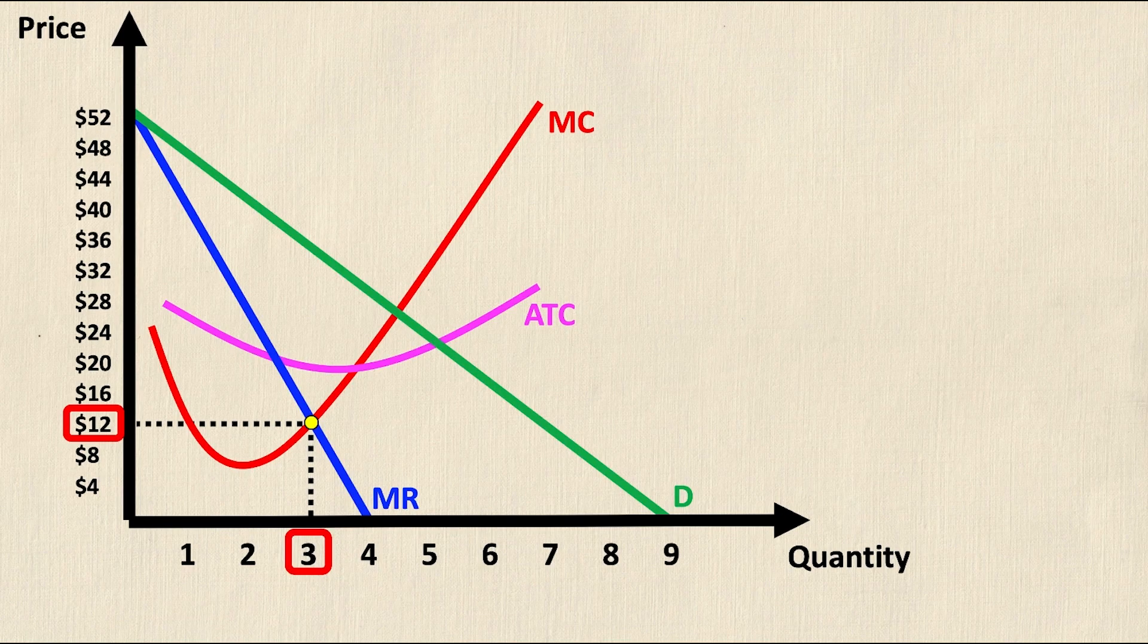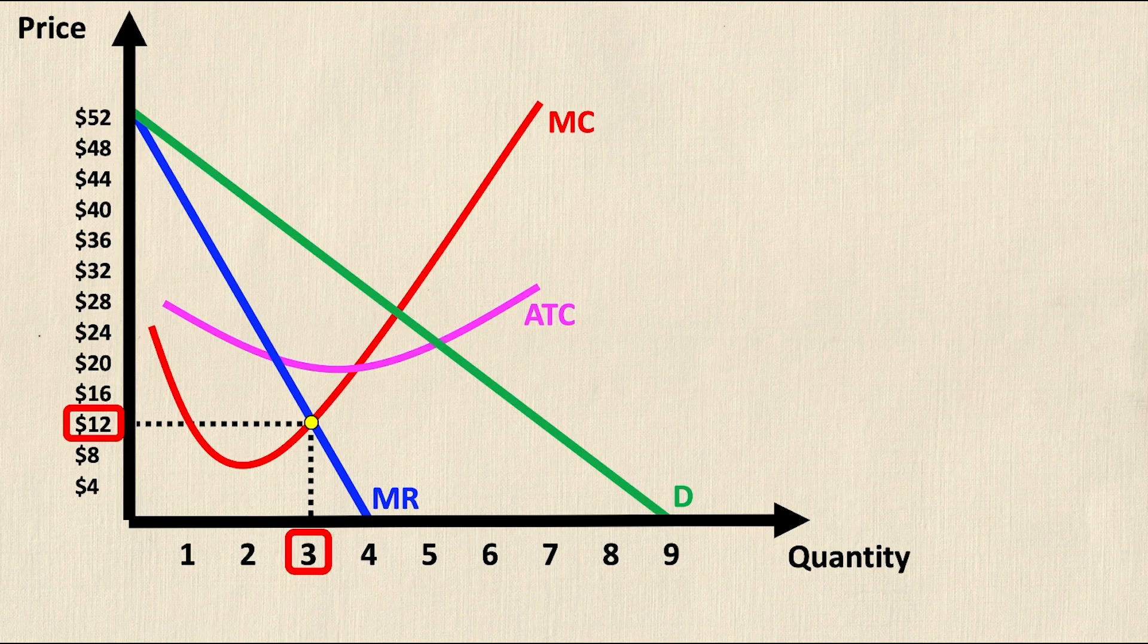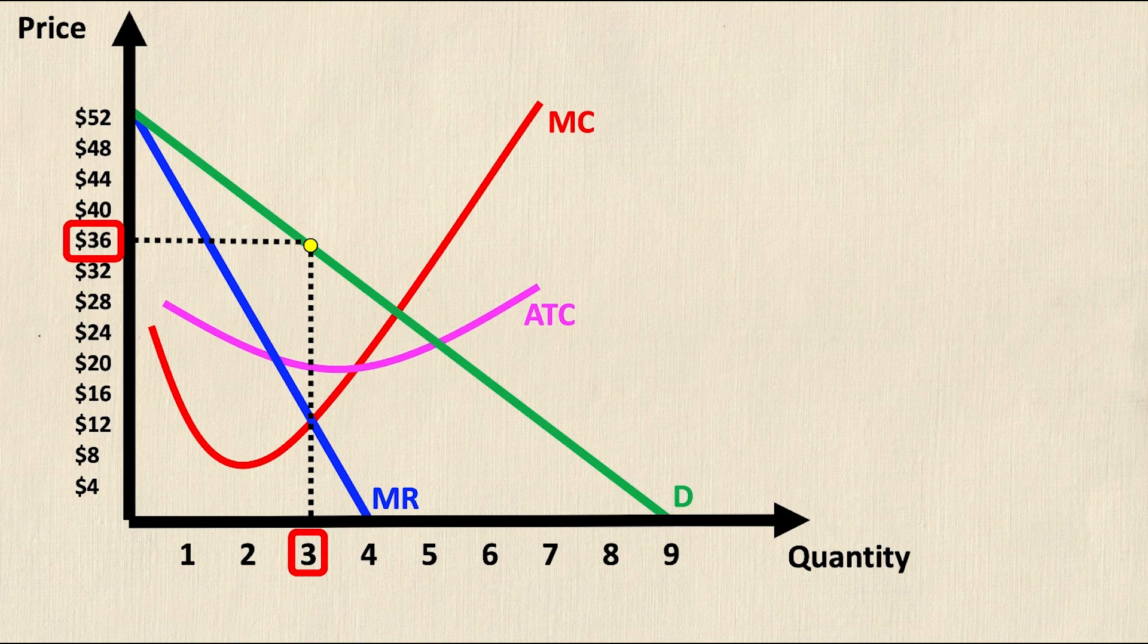But we know that a monopoly is very different because they are not constrained to any competition which means they can actually charge a price much higher and they will follow in a straight line all the way up until they reach the demand curve which in this case is $36.